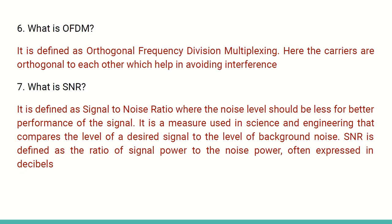What is OFDM? OFDM is nothing but Orthogonal Frequency Division Multiplexing. In this, the carriers are all orthogonal to each other, which helps in avoiding interference. It is a very important concept — to avoid interference, OFDM is followed because it is orthogonal in structure.